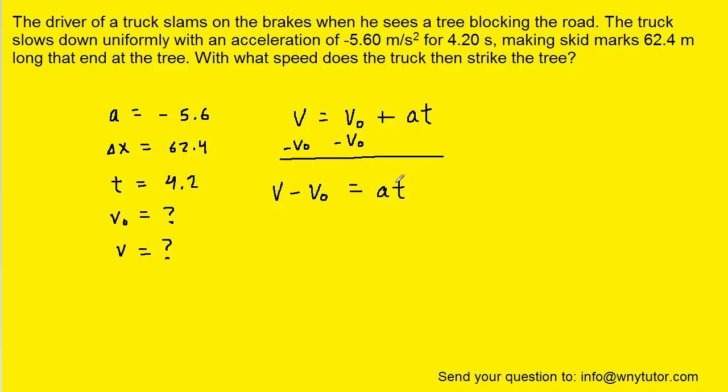We're going to go ahead and plug in for the acceleration and the time. And when we multiply those, we get negative 23.5. So we do know that the final velocity minus the initial velocity is equal to negative 23.5. We're going to hold on to this result and use it momentarily.